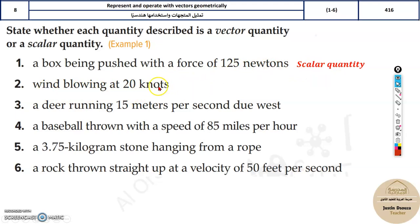Wind blowing at 20 knots - knots is the measurement of speed. Over here, 20 knots, but no direction. So again, it's scalar.